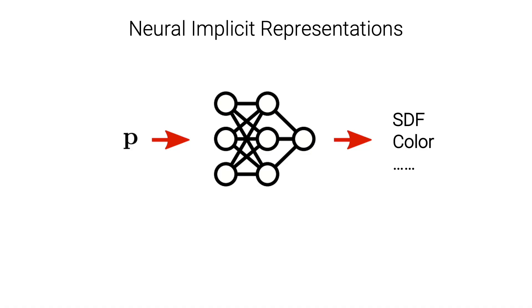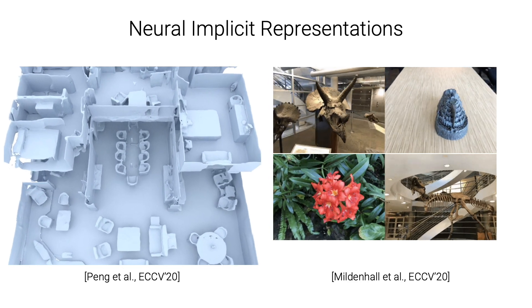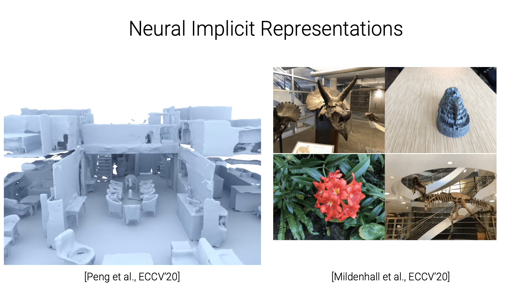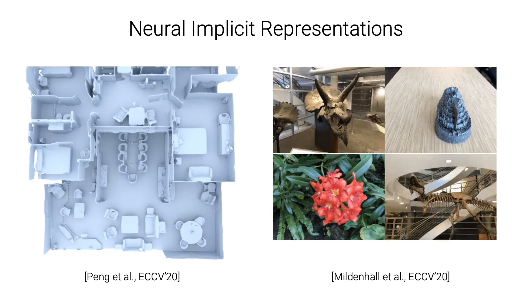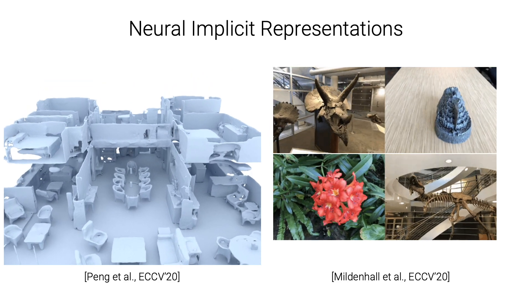The key components to make this happen are Neural Implicit Representations. Given a point P in the space, a neural network is trained to implicitly represent different scene properties for this point, for example, sine-distance fields or the color values. Neural Implicit Representations have drawn so much attention in recent years because they have emerged to be a powerful tool to capture high fidelity geometry or render high quality images for large scenes.